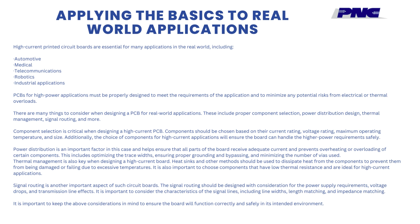Thermal management is also key when designing a high-current board. Heat sinks and other methods should be used to dissipate heat from the components to prevent damage or failure due to excessive temperatures. It is also important to choose components that have low thermal resistance and are ideal for high-current applications. Signal routing is another important aspect, and should be designed with consideration for power supply requirements, voltage drops, and transmission line effects. It is important to consider signal line characteristics including line widths, length matching, and impedance matching.